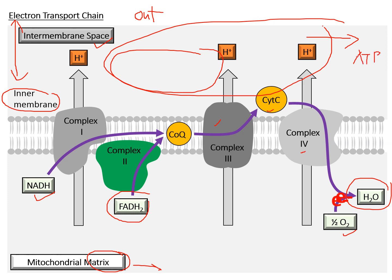This is why NADH can make more ATPs than FADH2. One NADH can make up to three ATPs, while one FADH2 can only make up to two ATPs. That's because complex 2 cannot pump any protons across the membrane. The reason is that complex 2 is not exactly a transmembrane protein, so it cannot form a channel or passage to allow the movement of protons across the inner membrane.